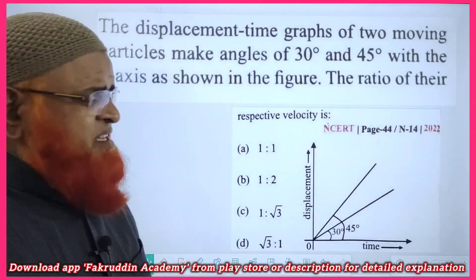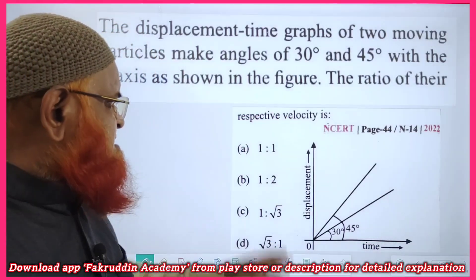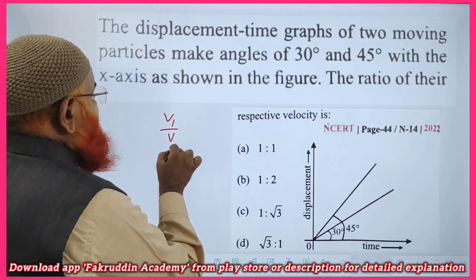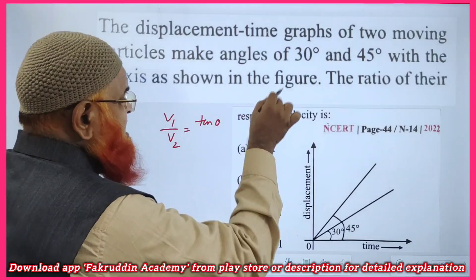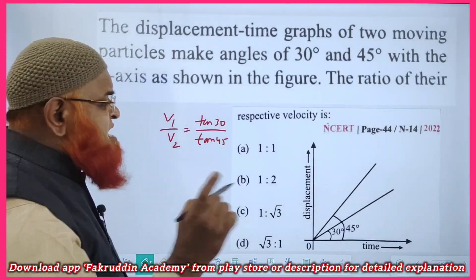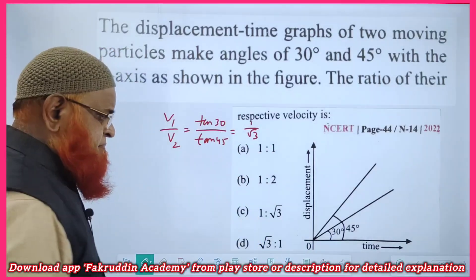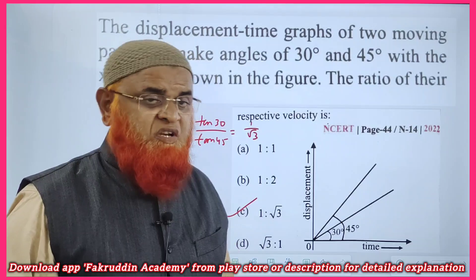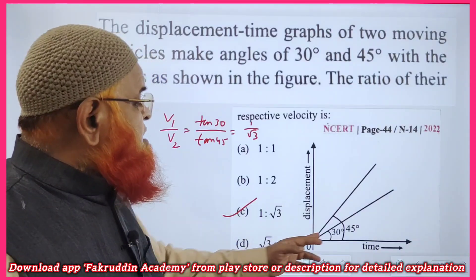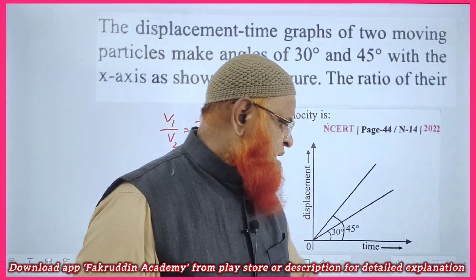In the second problem, there are two graphs with different angles and we need to find the ratio of velocities. Velocity equals tan theta, so V1/V2 = tan 30° / tan 45°. Tan 30 is 1/√3 and tan 45 is 1, so the ratio is 1/√3 divided by 1. Your answer is option C. The slope — tan theta — gives velocity directly.